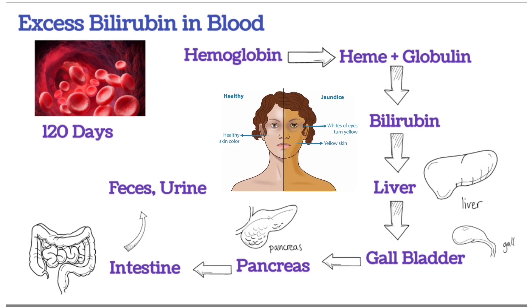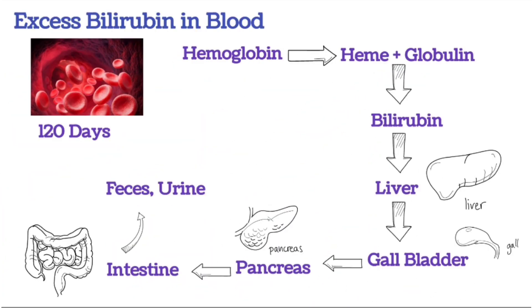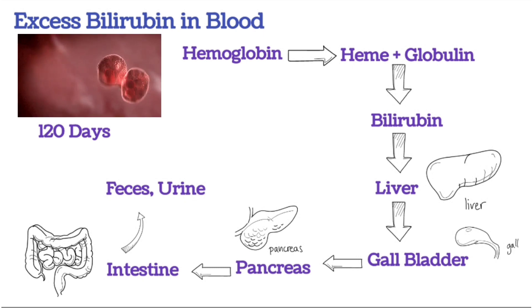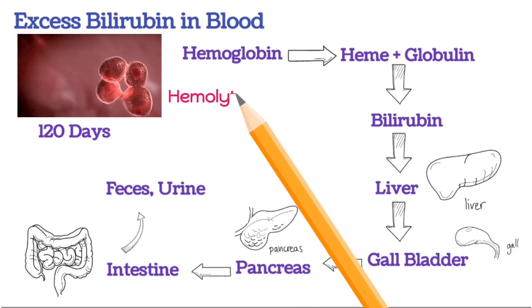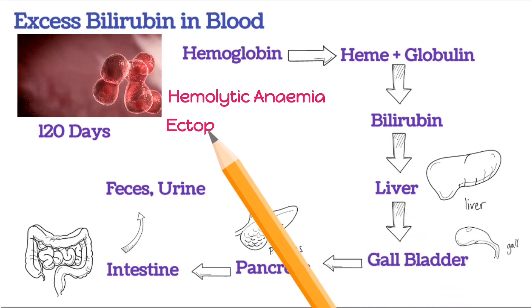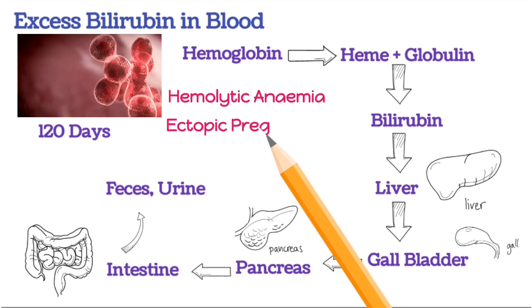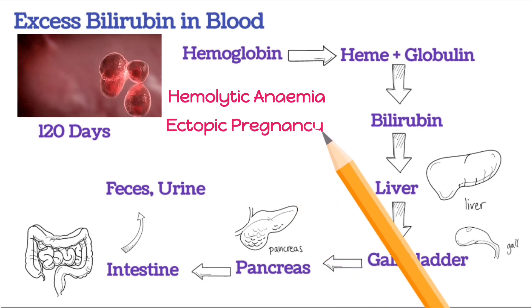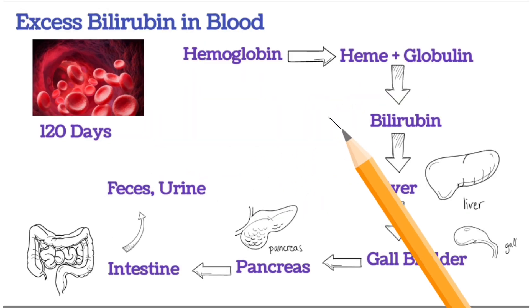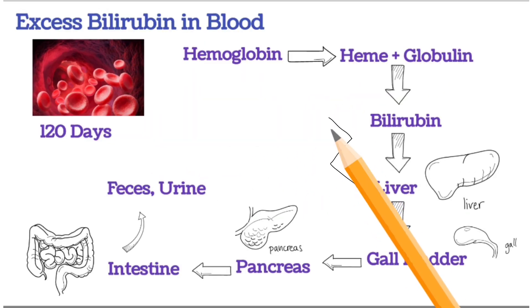There are various causes of jaundice. In conditions where there is excessive breakdown of red blood cells, like hemolytic anemia or ectopic pregnancy, there are chances of jaundice. If there is any liver problem,